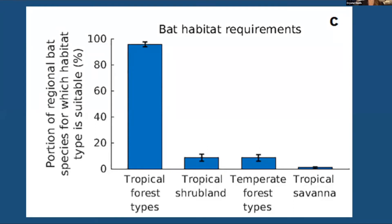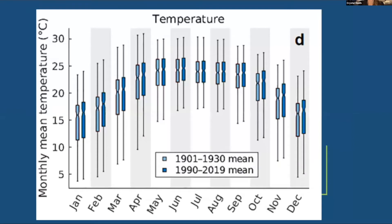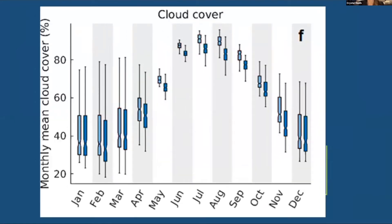This process created a suitable environment for many bat species in the region that required a more forested habitat, explaining the increase in bat species richness. This graph shows temperature changes recorded between 1901–1930 versus 1990–2019. You can see increases especially in October, November, and December, as well as in January through April. Cloud cover monthly mean percentages have also decreased in recent decades compared to 1900–1930.